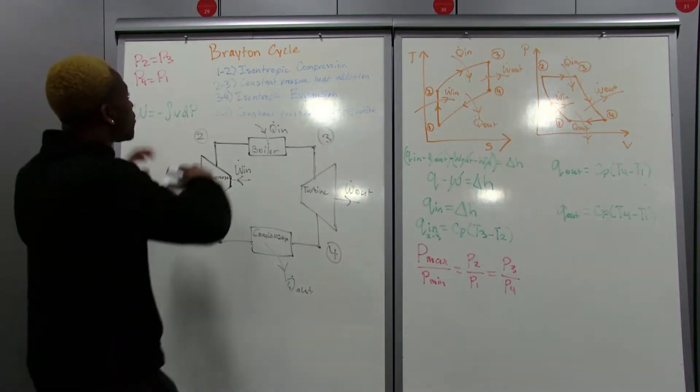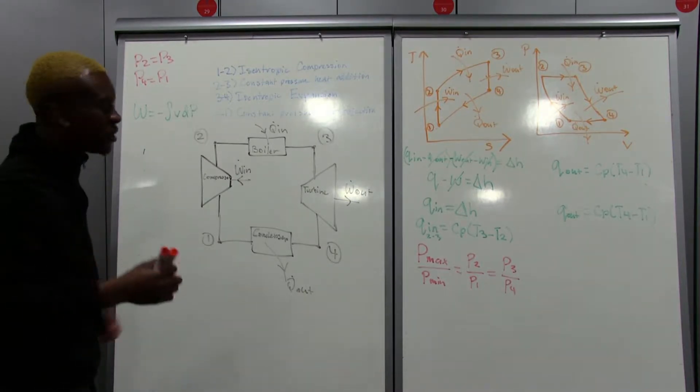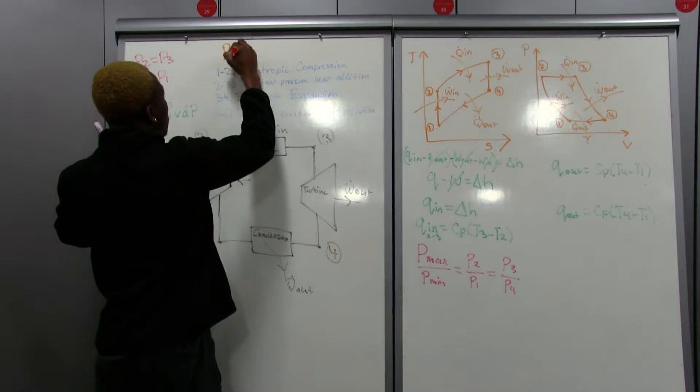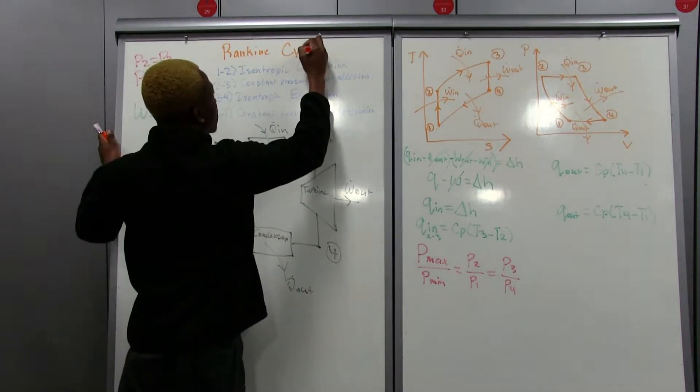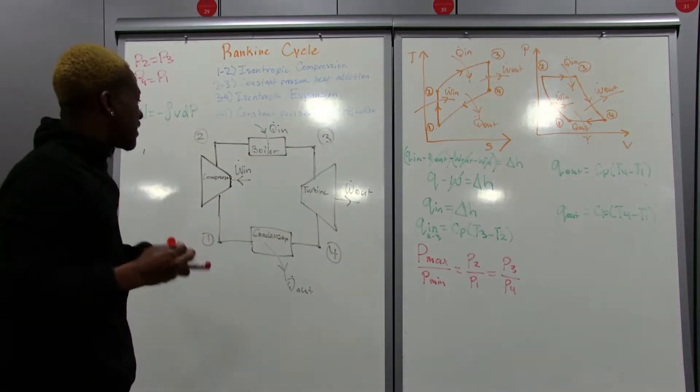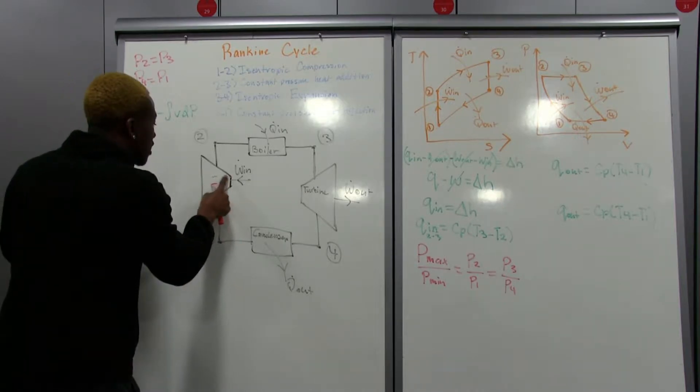Basically, the Brayton Cycle dealt with an ideal gas. The Brayton Cycle, I'm sure you can see where I'm going with this, deals with water. So that's Rankine. I don't know if I'm pronouncing it properly, forgive me. But basically, it's the same exact thing that's going on, except now that we're dealing with water, we can call this compressor a pump.